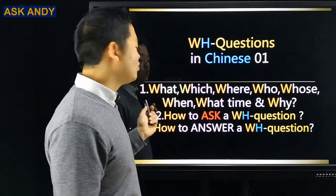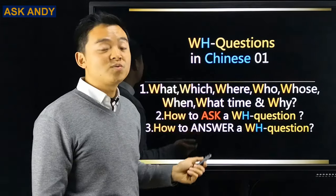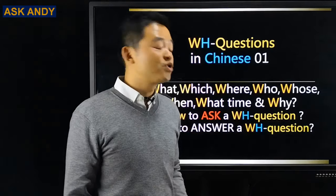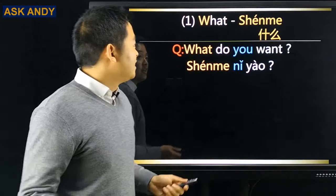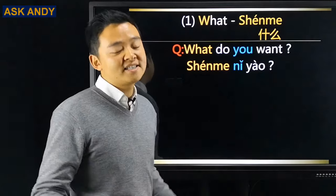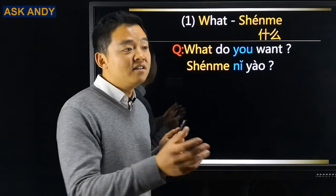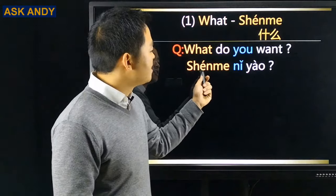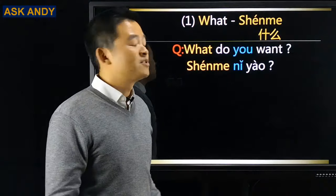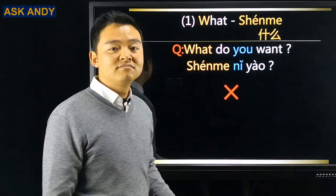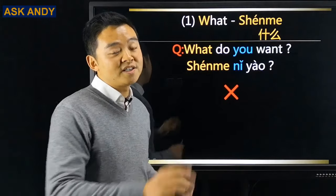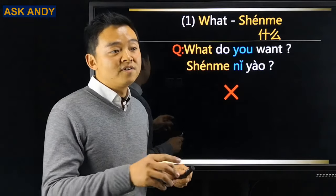We've done question number one. Now, question number two: how to ask a WH-question. Let's start with 'what' — 什么. A common question is 'what do you want?' It does NOT work to say 什么你要 (literal English order) — that's wrong. The word order in Chinese WH-questions is different from English.